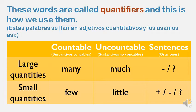For large quantities, we use many for countable nouns and much for uncountable nouns, in negative or interrogative sentences. For small quantities, we use few for countable nouns and little for uncountable nouns, in affirmative, negative, or interrogative sentences.